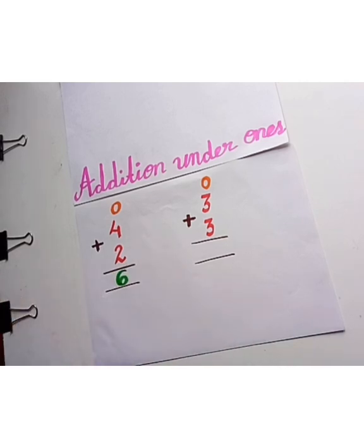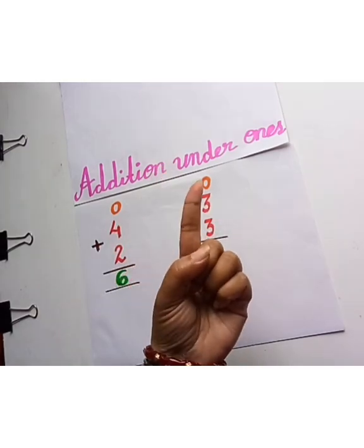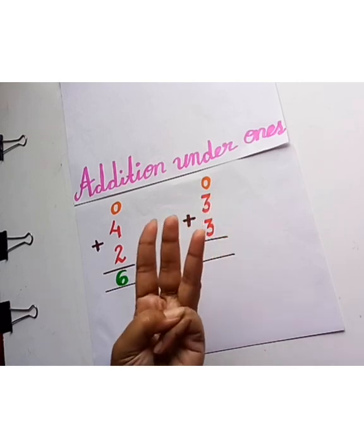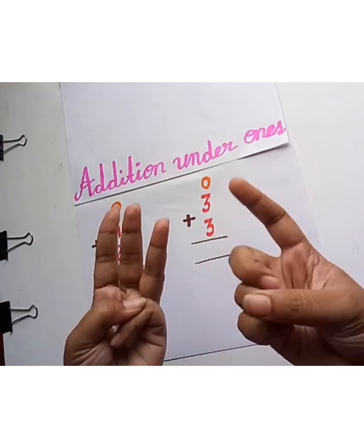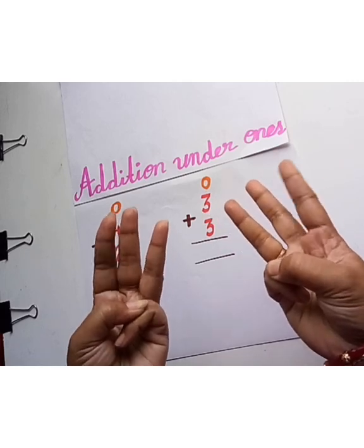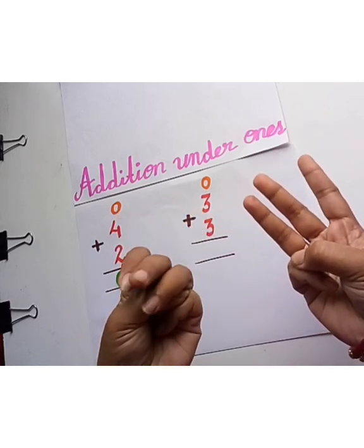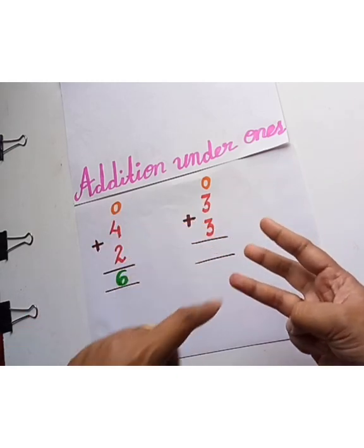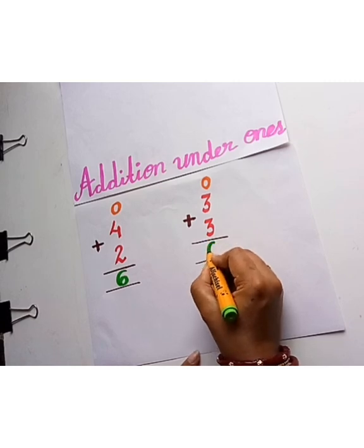Now let's see the next sum: 3 — 1, 2, 3 — and another 3 — 1, 2, 3. Let's count: 1, 2, 3, 4, 5, 6. Let's write here 6.